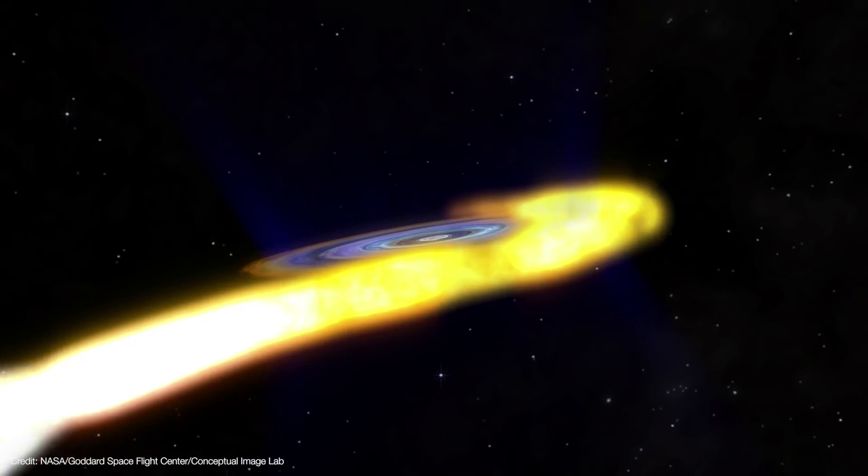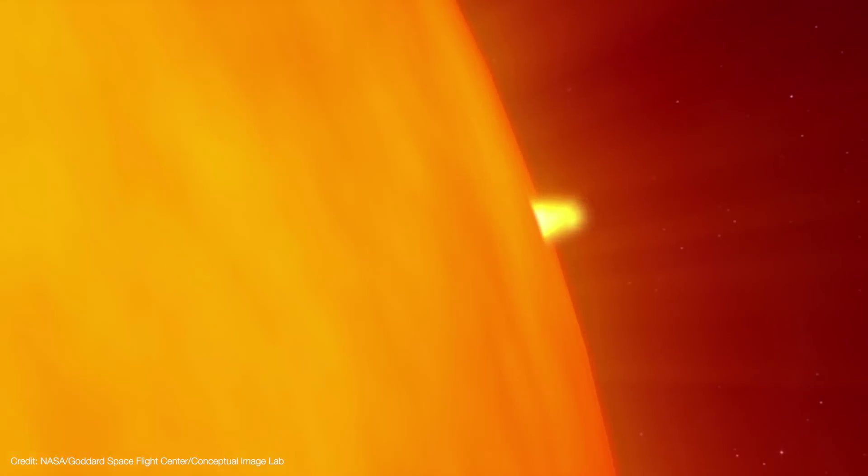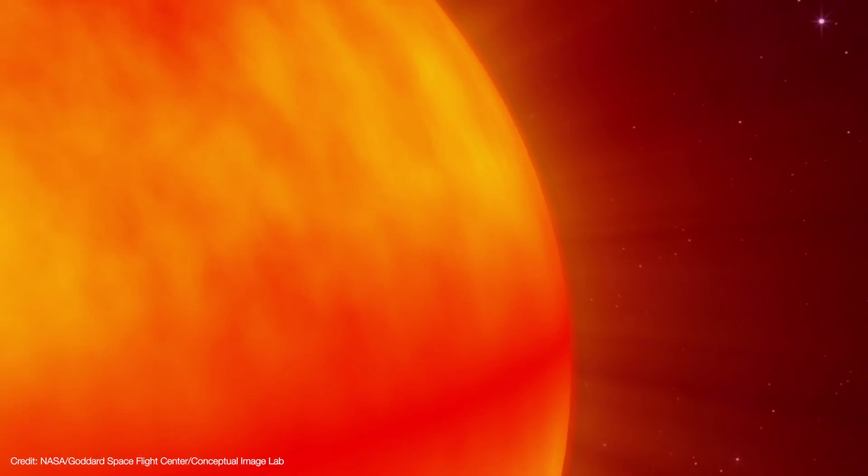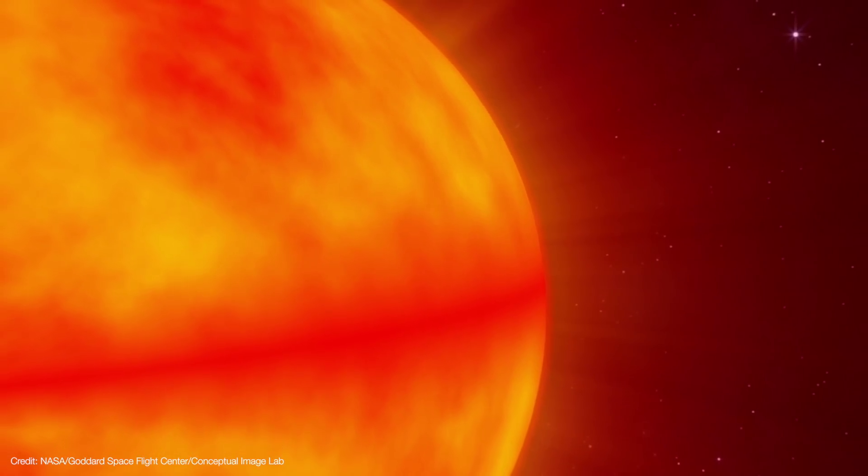So this black hole probably formed some billions of years ago. However, its companion star couldn't be any more different. It's a K-type sub-giant star that's 70% the mass of the sun. It exhausted its supply of hydrogen fuel and is in the process of swelling up to become a red giant. The star orbits the black hole in just six and a half days. They're so close together, the black hole siphons off material from the star.